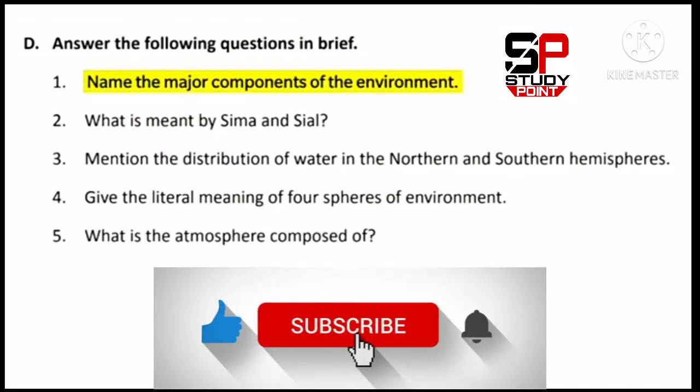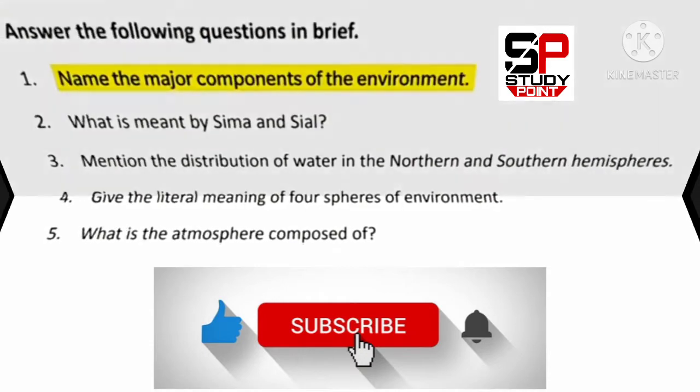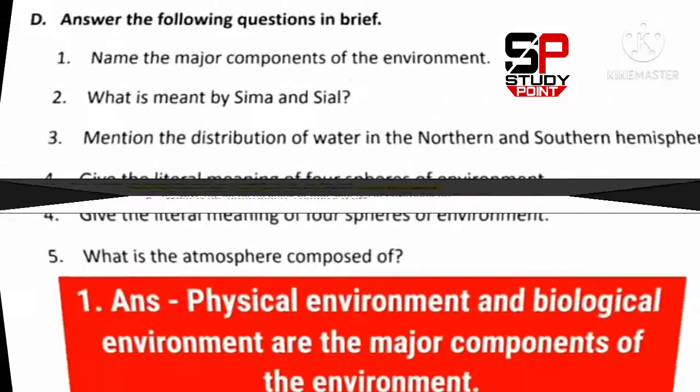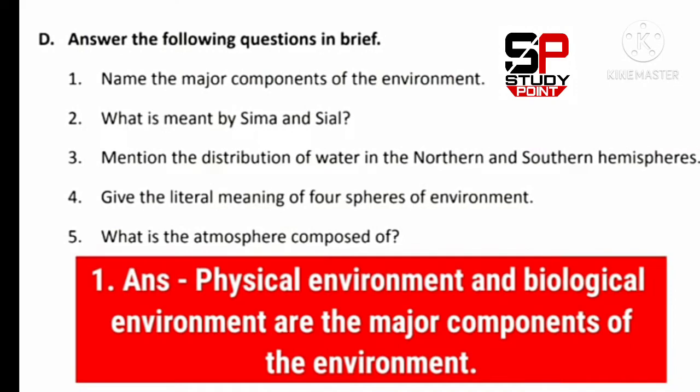Question number one: Name the major components of the environment. The answer is physical environment and biological environment are the major components of the environment.